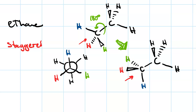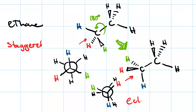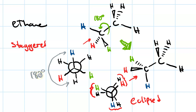Looking from the left, we get this Newman projection. The front carbon has been inverted and the back carbon has stayed the same. This is what's called an eclipsed conformation. The eclipsed conformation is at higher energy because of steric interactions — we have three H–H eclipsing interactions. Whereas I had a 180-degree torsion angle in the staggered conformation, I now have a zero-degree torsion angle in the eclipsed conformation.